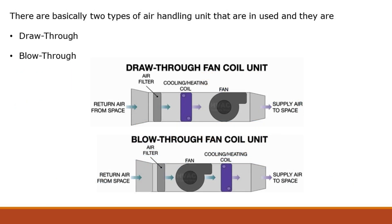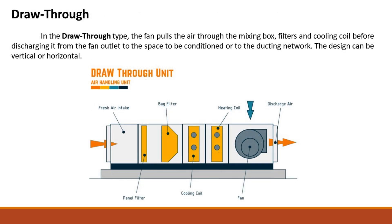There are basically two types of air handling unit in use: draw-through and blow-through. In the draw-through type, the fan pulls the air through the mixing box, filters, and cooling coil before discharging it from the fan outlet to the space to be conditioned or to the ducting network. The design can be vertical or horizontal.